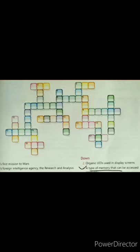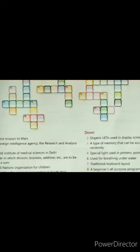Clue number 3, a type of memory that can be accessed randomly. And the answer for this one is RAM. RAM is the memory which can be accessed randomly. So where is number 3? Here. It will be filled from top to bottom. So we will write R-A-M, RAM.